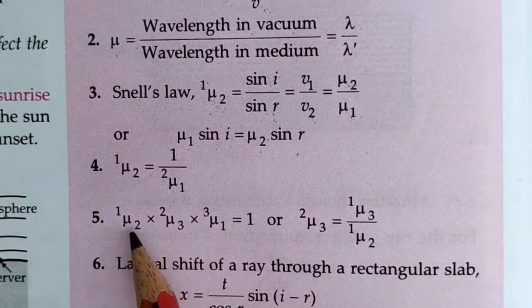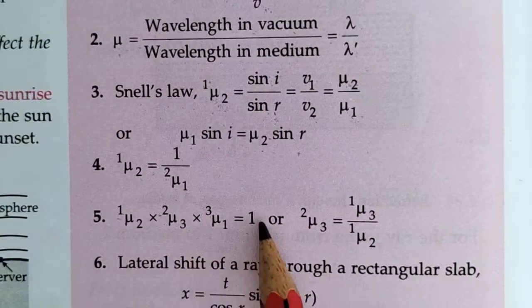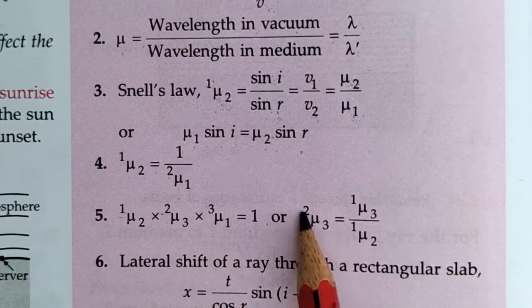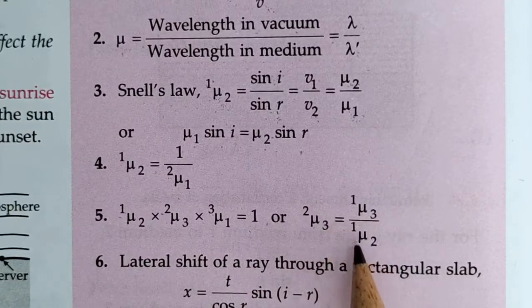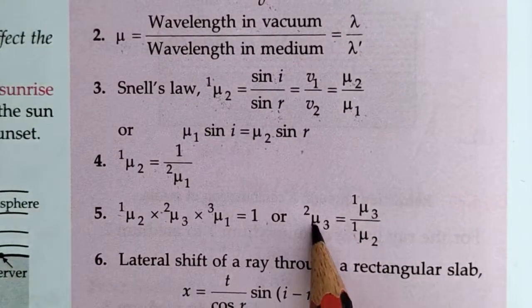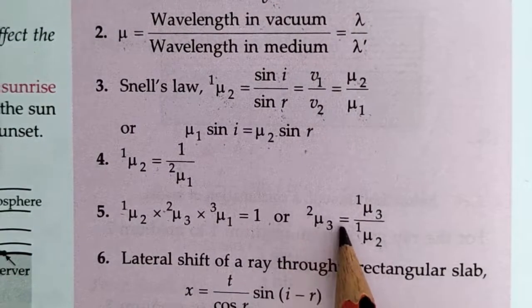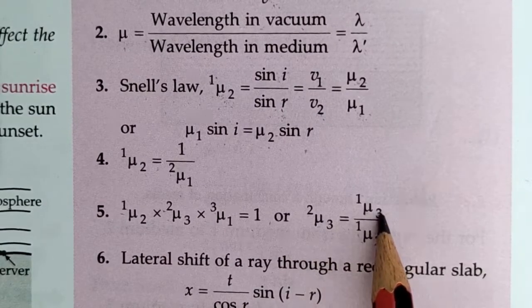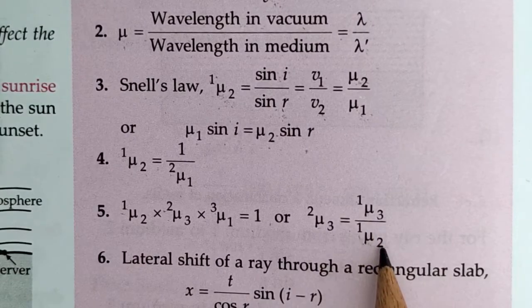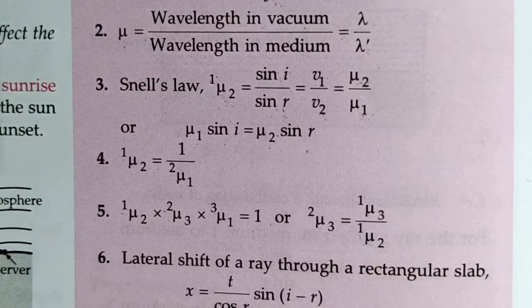The fifth formula: mu₂₁ into mu₃₂ into mu₁₃ equals 1. From here we can say mu₃₂ equals mu₃₁ divided by mu₂₁, meaning the refractive index of the third medium with respect to the second equals the refractive index of the third medium with respect to the first divided by refractive index of the second with respect to the first.